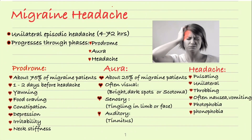Migraine headache is a condition in which patients usually present with unilateral episodic headache lasting from 4 hours to 72 hours. Sometimes it is just a headache, but in some patients it presents with prodrome and aura. The pathology is still incompletely understood, but somehow there is excessive activation of the trigeminal nerve.